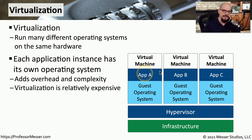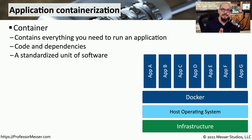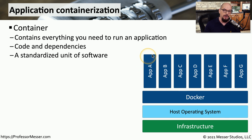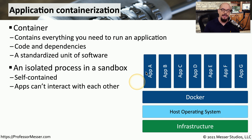What if we could run these applications but instead of having separate guest operating systems, we had a single operating system running? That's exactly what we do by using containerization. Application containerization means we'd still have our physical infrastructure and a single host operating system, and then we would use container software such as Docker to run multiple applications simultaneously in their own separate sandbox, without having separate host operating systems for each one. Each one of these applications is self-contained, so everything you need to run application A is in the application A container.